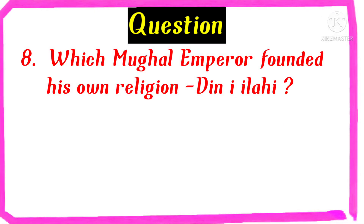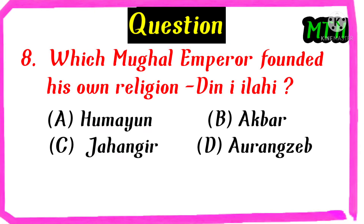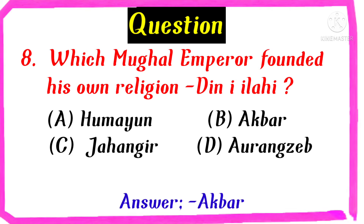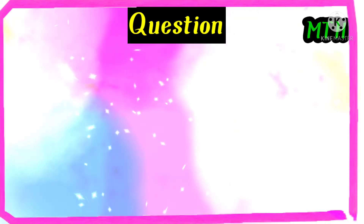Which Mughal Emperor founded his own religion, Din-i-Ilahi? Humayun, Akbar, Jahangir, Aurangzeb. The right answer is Akbar.